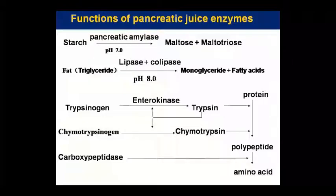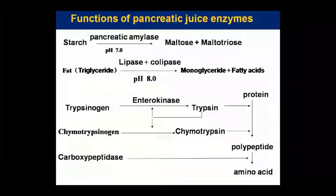Now let's look at the functions of pancreatic juice enzymes. Pancreatic amylase works at pH 7 and breaks starch into maltose and maltotriose. For fat — triglyceride — at pH 8, in the presence of lipase and colipase, it is broken down into monoglycerides plus fatty acids.